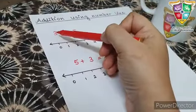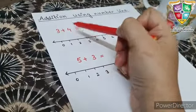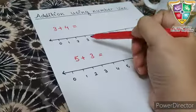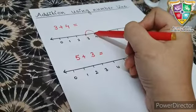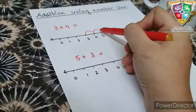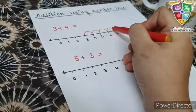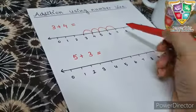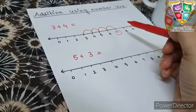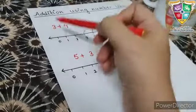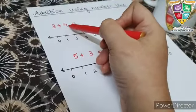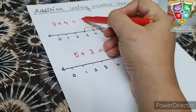To find the sum of 3 and 4 on the number line, we start at 3 and jump 4 numbers to our right. So children, which number do we get? Yes, you are right. We get number 7. Therefore, the sum of 3 and 4 is number 7.